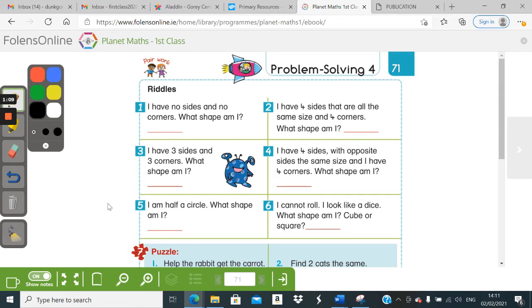Number two, I have four sides that are all the same size and four corners. Well, if a shape has four corners, then it has four sides, as it says in the riddle. So think of a shape with four sides. Well, a rectangle has four sides. Let's read a bit closer, though. All the sides are the same size.